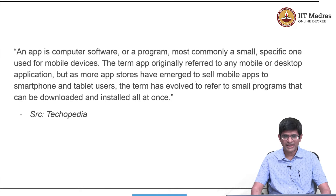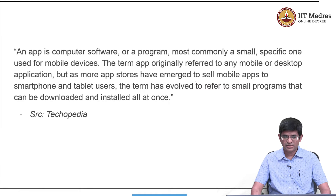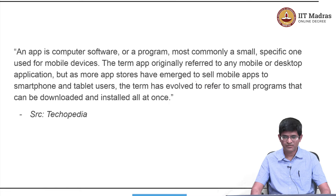According to this definition, an app is computer software or a program, in particular most commonly a small specific one used for mobile devices. The term app originally referred to any mobile or desktop application, and at some point especially after the rise of the Apple iPhone, app stores emerged. Now more and more app stores sell mobile apps to smartphone and tablet users, and since then the term has evolved to mean small programs that can be downloaded and installed all at once.